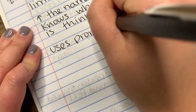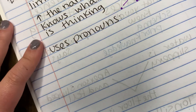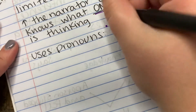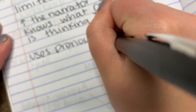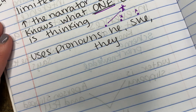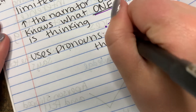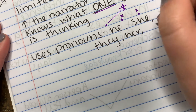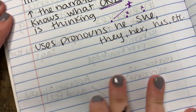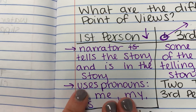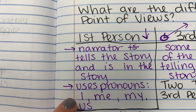Third person uses pronouns — this is what will help you. They'll say he, she, they, her, his, anything like that. So that is the difference. Right here they would say 'he went and did this,' where if it was in first person, you would say 'I went and did this.'